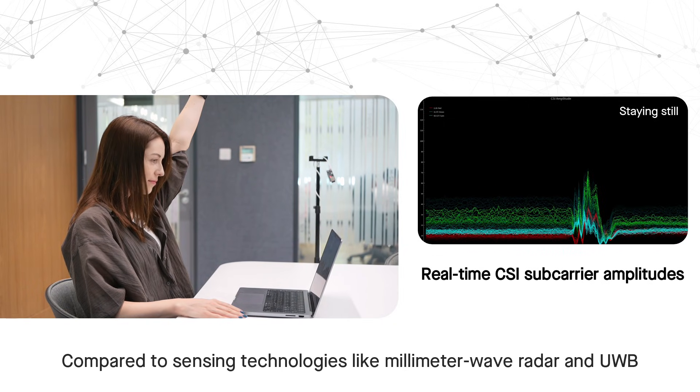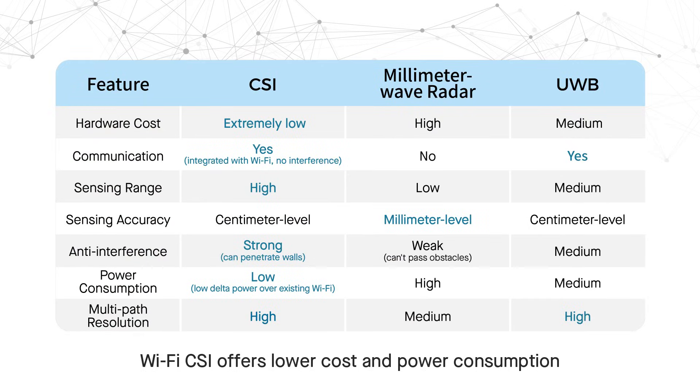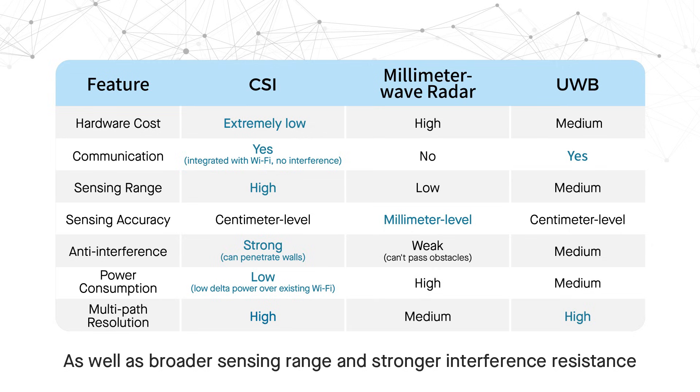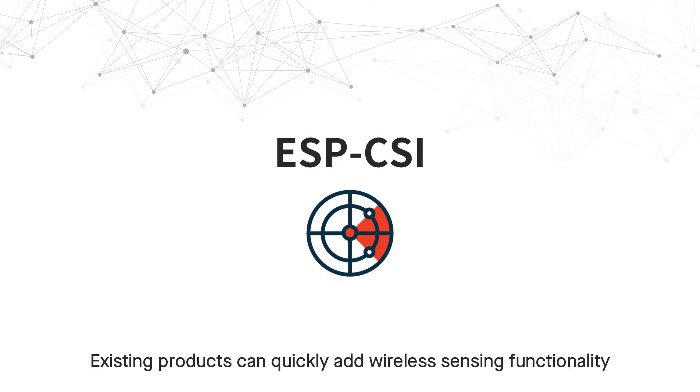Compared to sensing technologies like millimeter wave radar and UWB, Wi-Fi CSI offers lower cost and power consumption, as well as broader sensing range and stronger interference resistance. It has already been applied in commercial products across various fields.